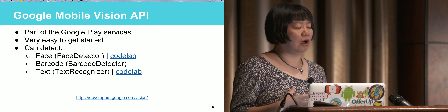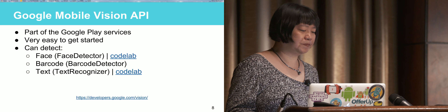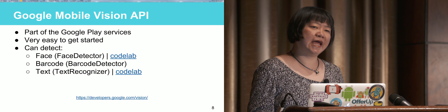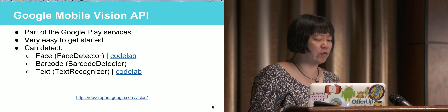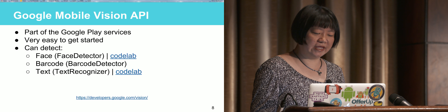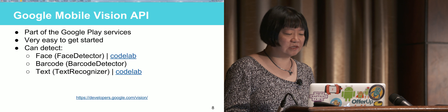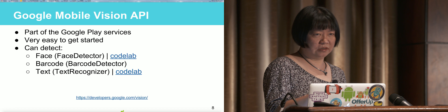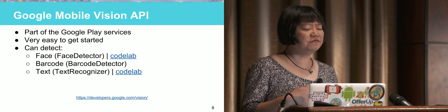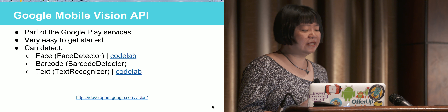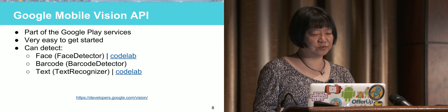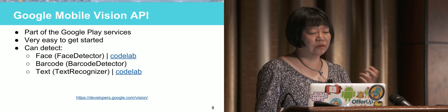Now switching to the Google Mobile Vision API. The Mobile Vision API was released with Google Play Services 7.8 last year, so it's not brand new. But what is new with the latest 9.2.1 release is a lot of enhancements to features, as well as text detection — the text recognizer was recently added last month. It's very easy to get started, and it can detect faces, barcodes, and text — a kind of multi-tracking with three types of detection.